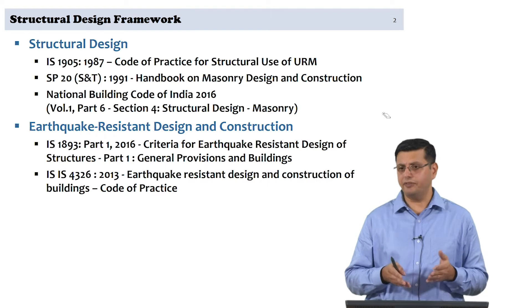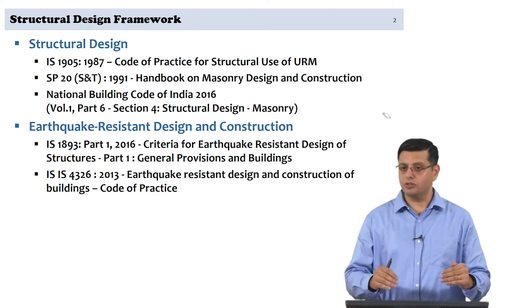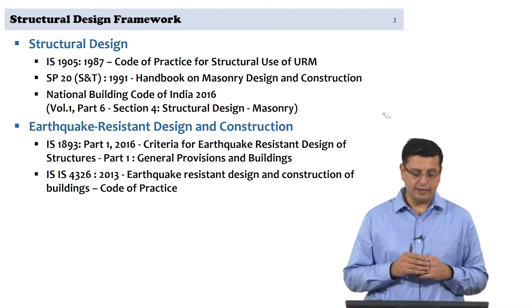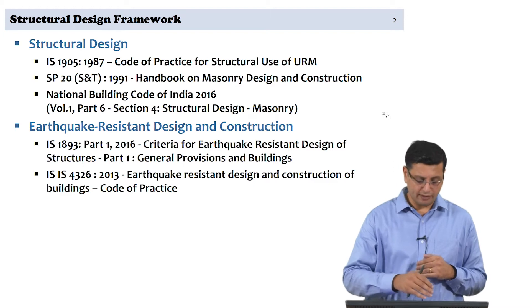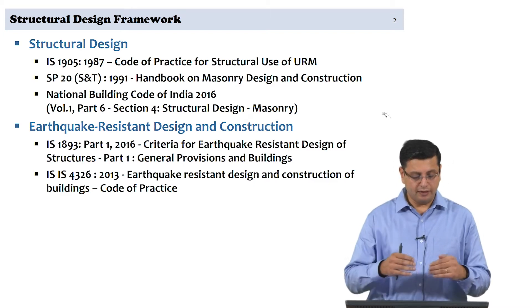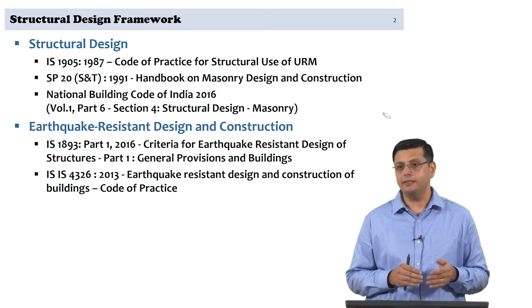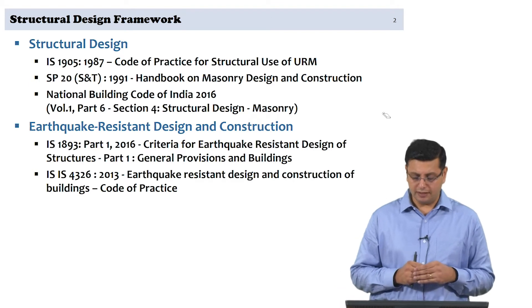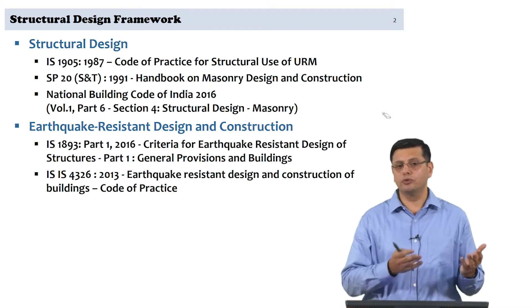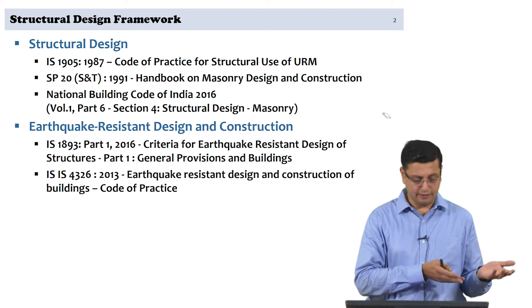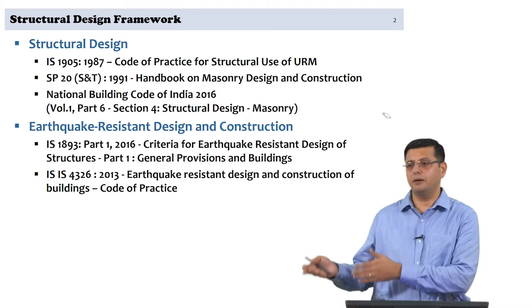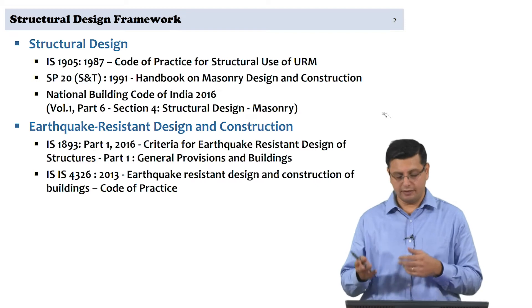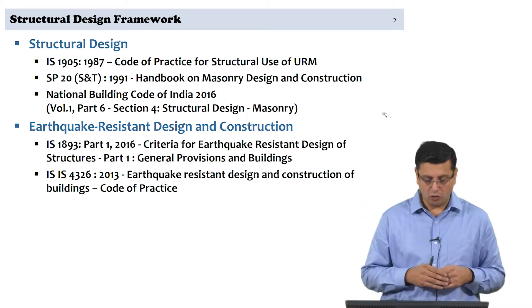IS 1905 is a code that has been reaffirmed in recent years. We will be dealing with the working stress design as per 1905. But before we go to that, we will examine the interconnection between the different codes. The handbook I was referring to is SP20, which is an explanatory handbook for design. It also goes into some construction aspects. It is useful to read the clauses of IS 1905, 1987 with the commentary given in the handbook. It gives you a better understanding of why certain provisions are the way they are in the code of practice.